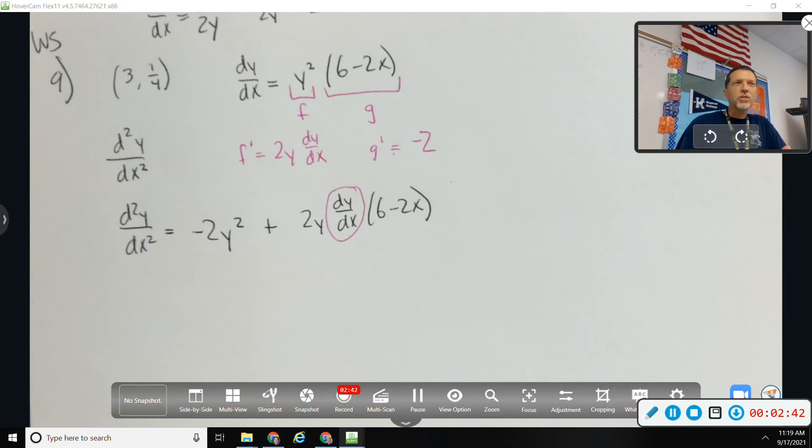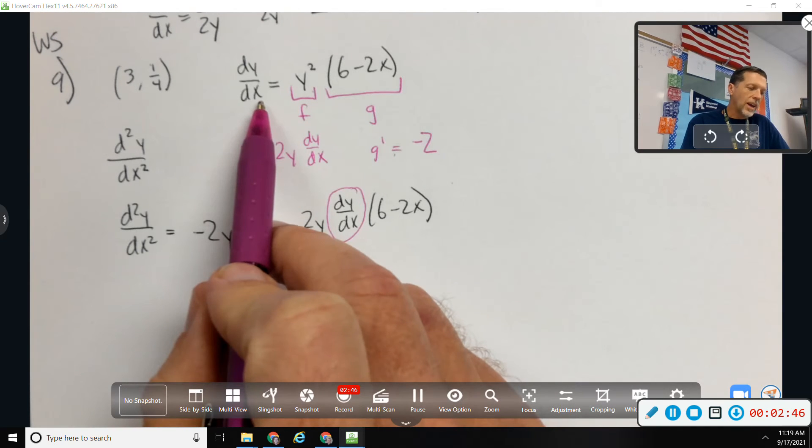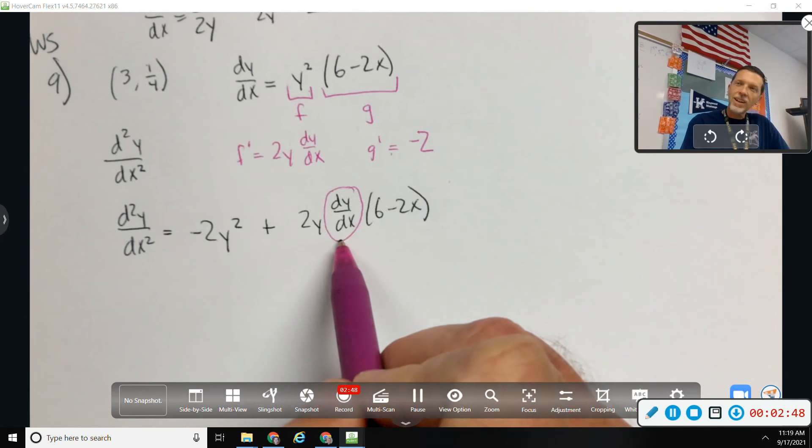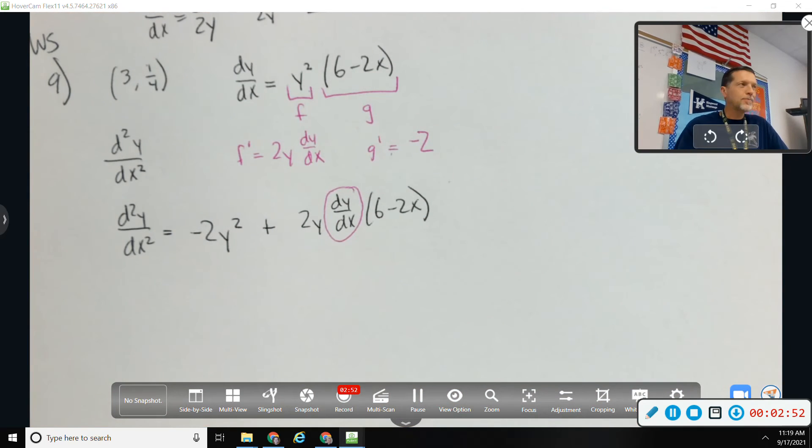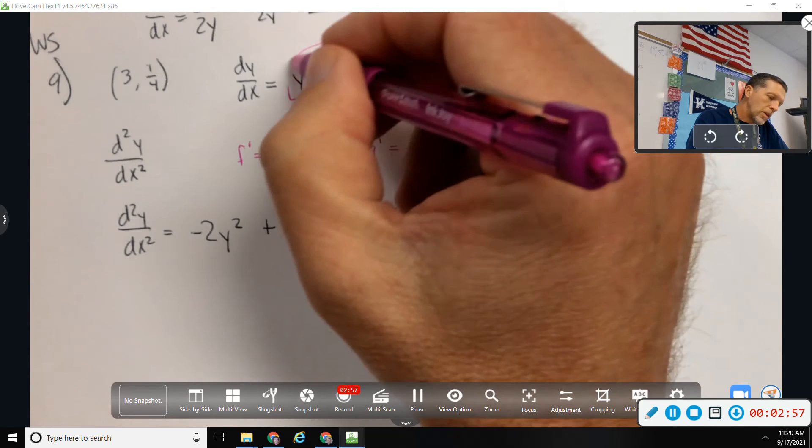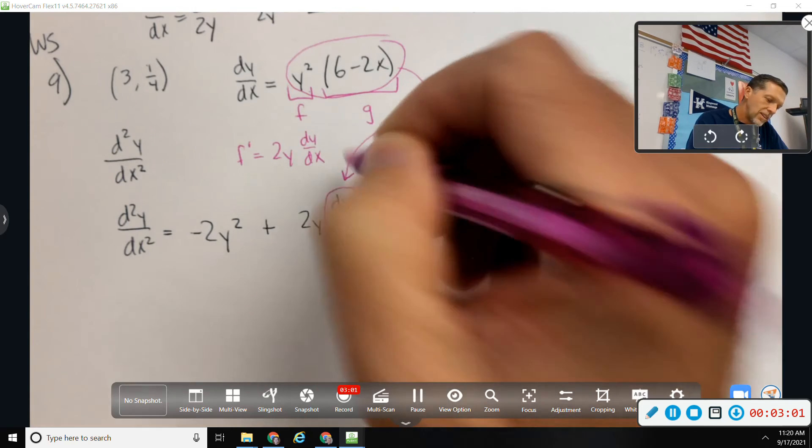So I have two options. I can plug in 3, 1 fourths into dy dx and get the number and then plug that in, or I can plug all of this in for dy dx. Either one is fine. Because it works more generically, I'm going to plug all of that into there.